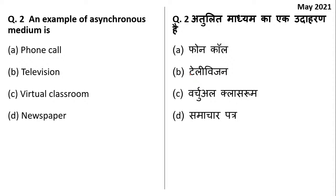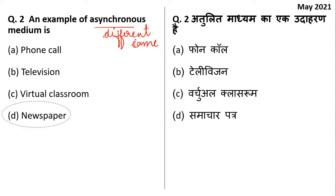An example of asynchronous communication is — phone call, television, virtual classroom, or newspaper? Asynchronous communication happens at different times, not necessarily at the same time. The answer is option D, newspaper. Newspapers get printed early in the morning and you read them later, then you might write a letter to the editor — these are all asynchronous media.